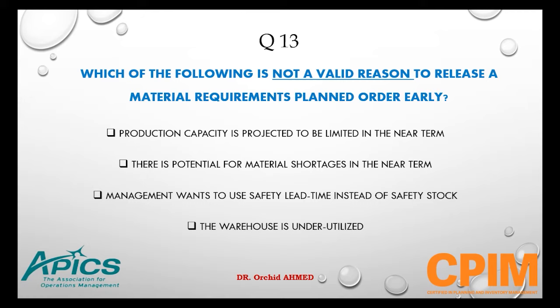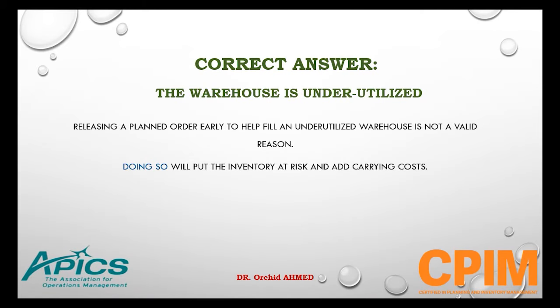Question number 13. Which of the following is not a valid reason to release a material requirement planned order early? Options: production capacity is projected to be limited in the near term, there is potential for material shortage in the near term, management wants to use safety lead time instead of safety stock, or the warehouse is underutilized. The right answer is the warehouse is underutilized — releasing a planned order early to fill an underutilized warehouse is not valid, as it puts inventory at risk and adds carrying cost.